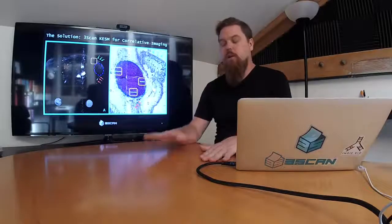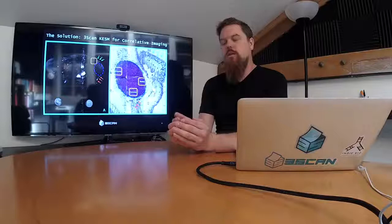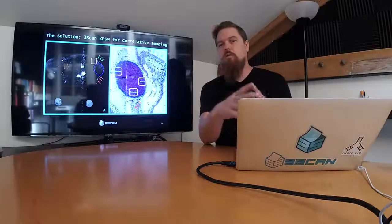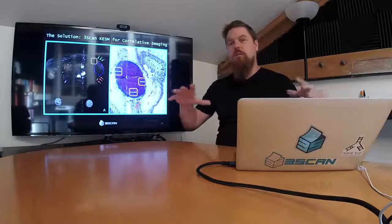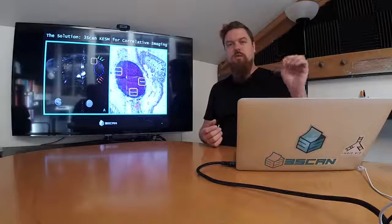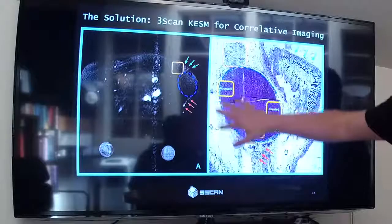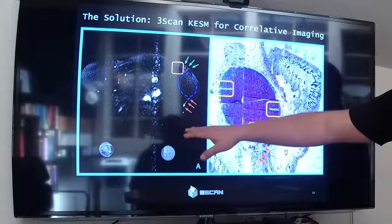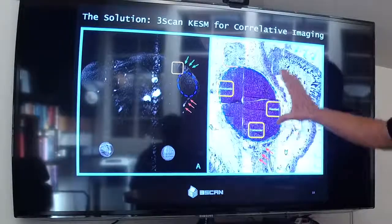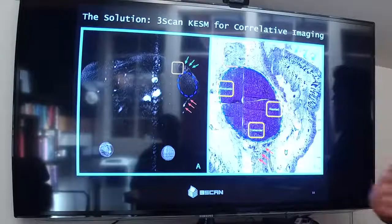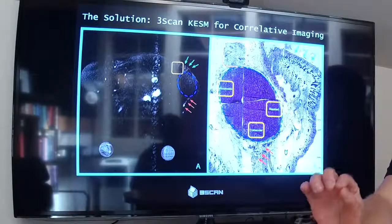And so one example of this is correlative imaging. And in classic pathology, the amount that you look at is so tiny that if you compare it to radiology data of the same tissue, you have no idea where it came from inside that tissue. At 3SCAN, because we can image volumes that are extremely large, we can segment and reconstruct features that you can see in both the radiology and the pathology. And so here's that tumor that I showed you earlier with an MR that was done previously. And so these vessels, we can see in both and then we can use that to align and co-register the two different data sets.